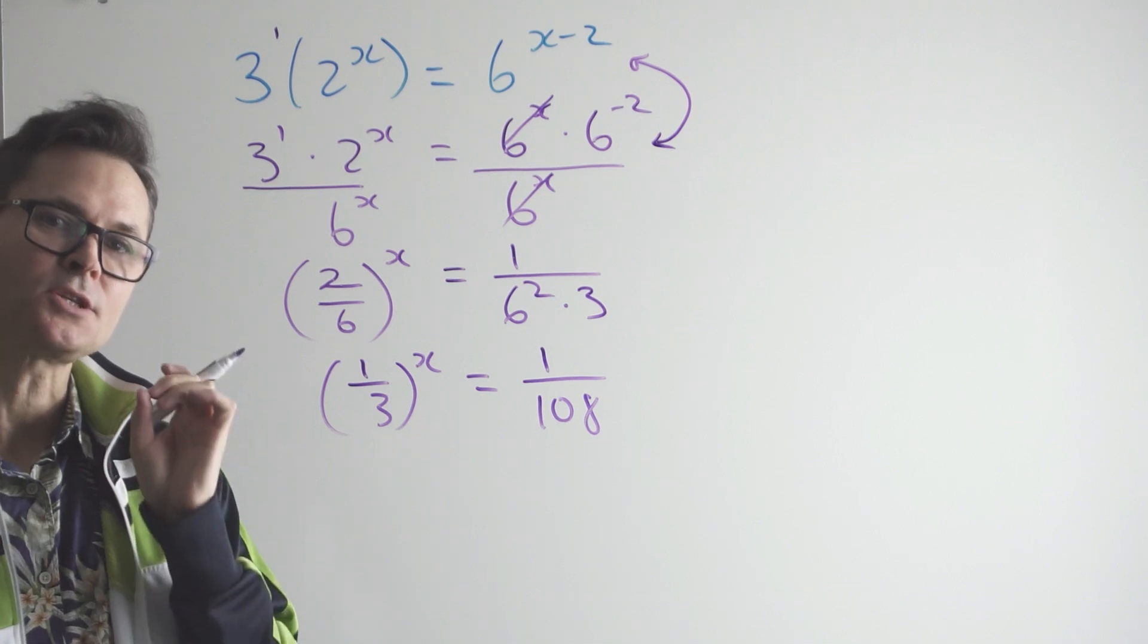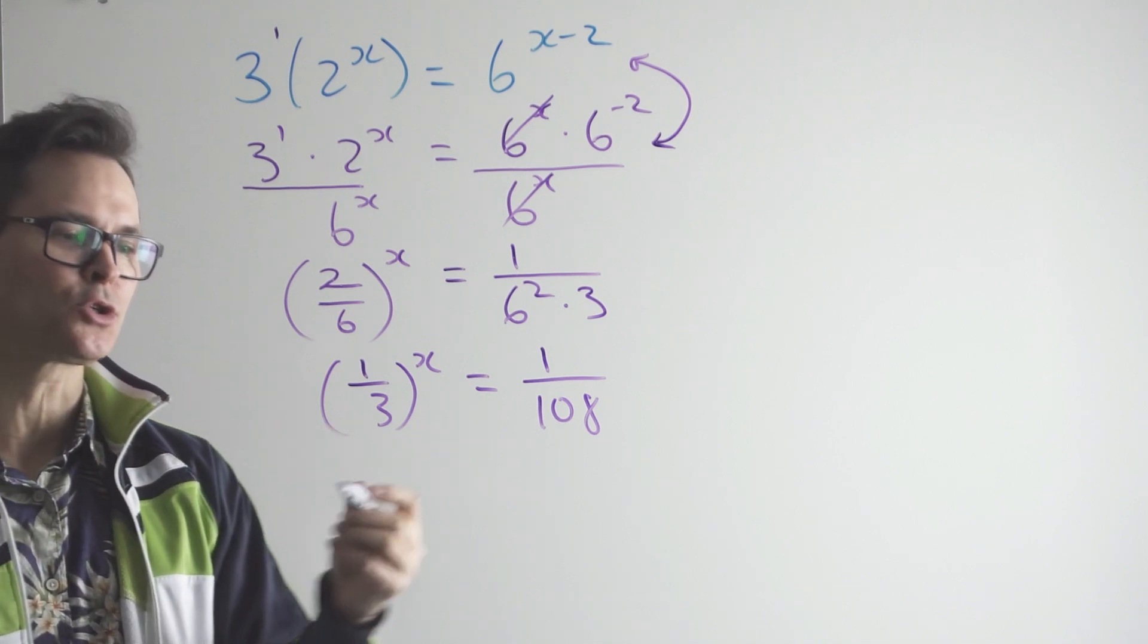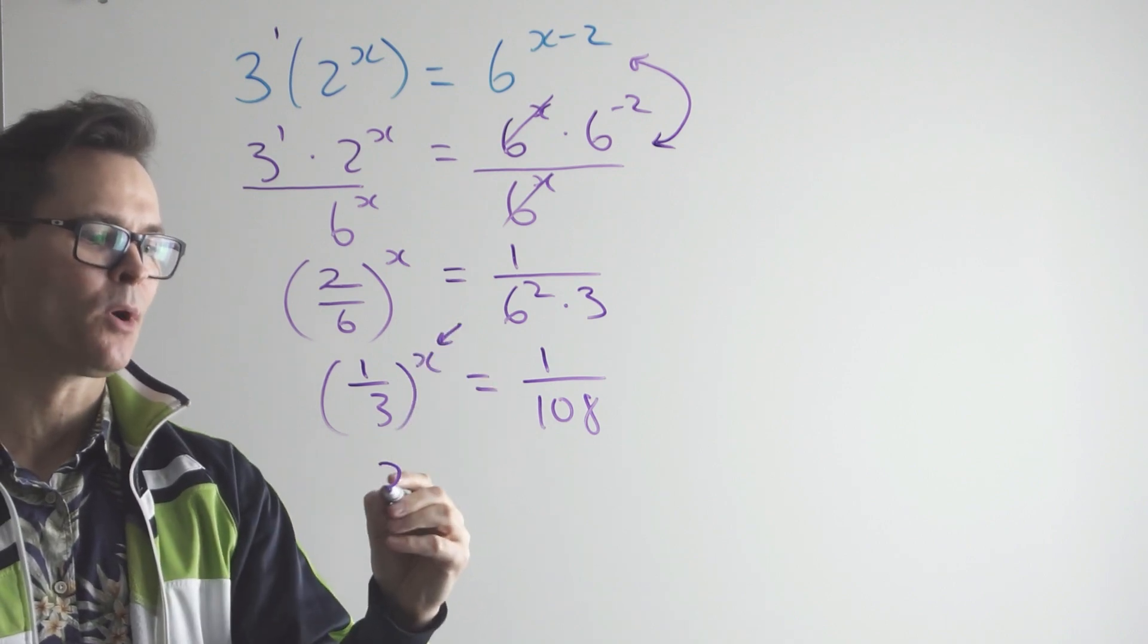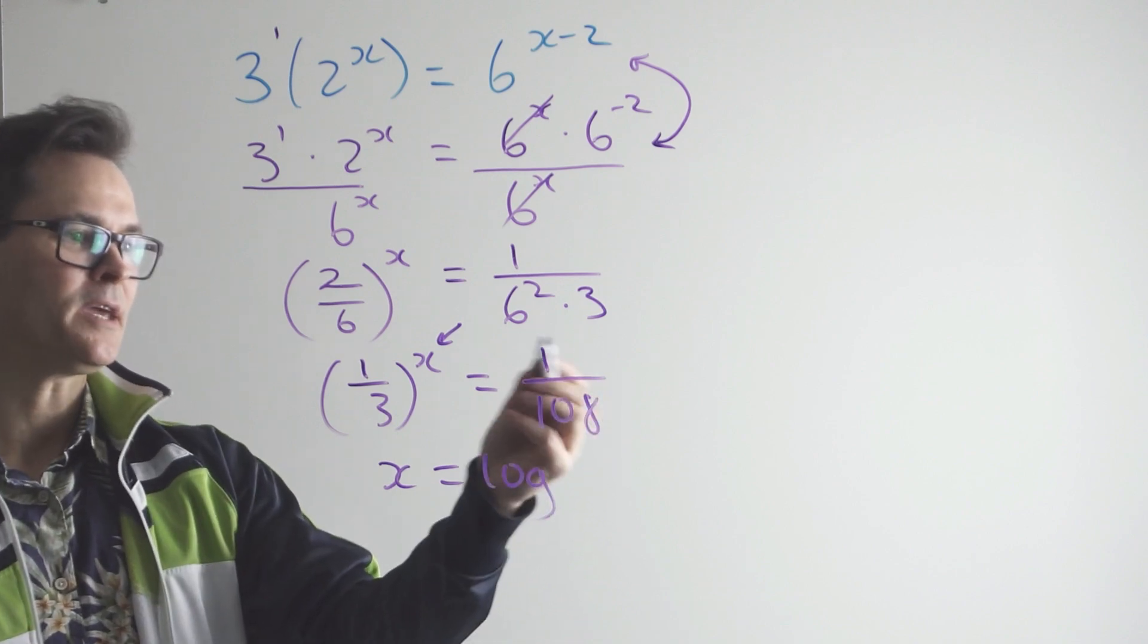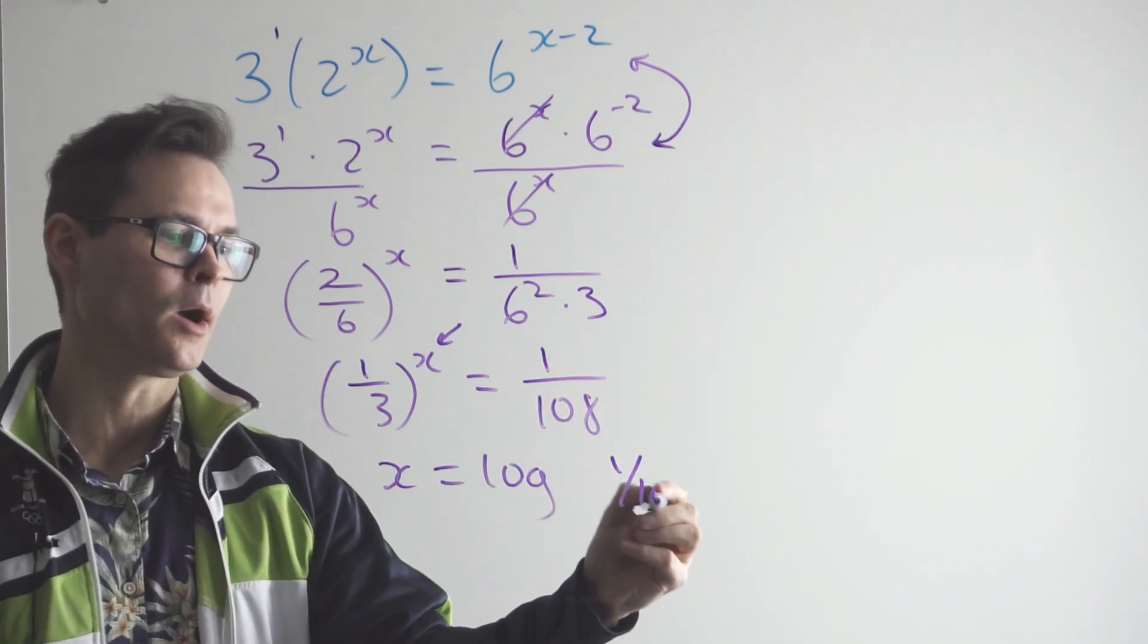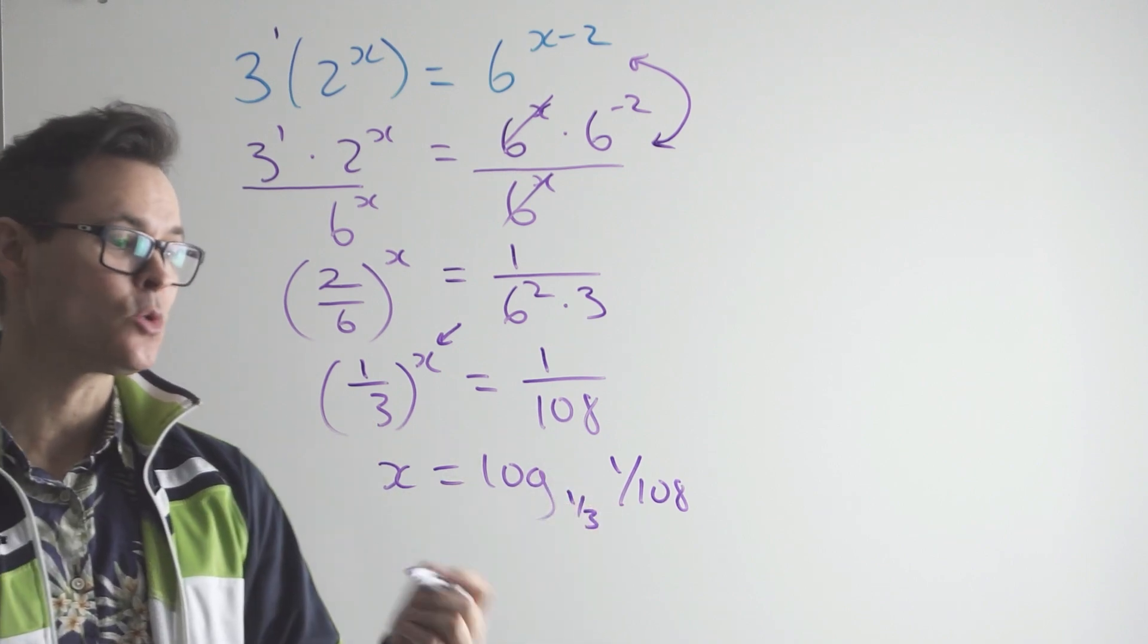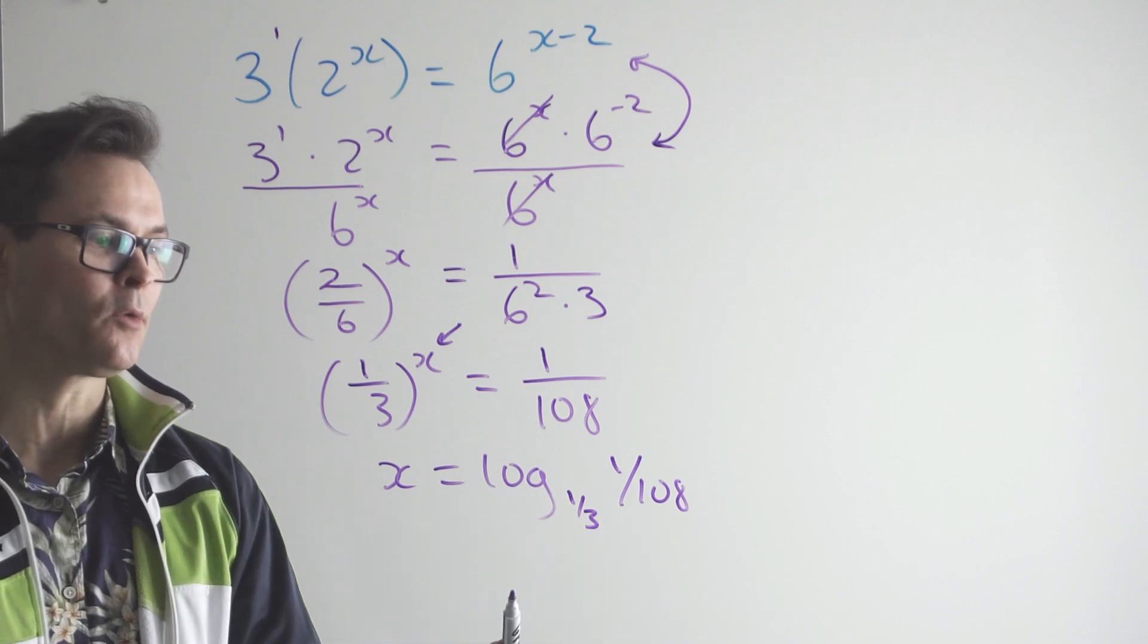And now, this is the only place where I use a log rule. I rewrite it. This is an exponential form. Now I write it in log form. So the log form says the exponent is a log. Do you see? The log of the argument, 1 over 108, base 1 over 3. And by the way, that's equivalent. Notice that I've got the base as 1 over 3 and the argument is 1 over 108. Both can be flipped. There's a rule for that, or you could just play with it and rewrite it that way.